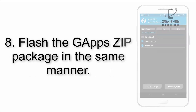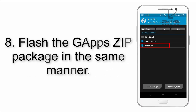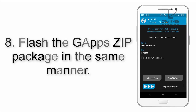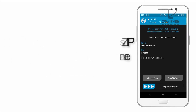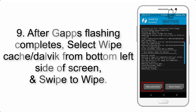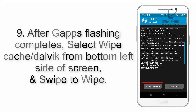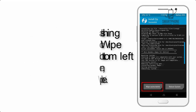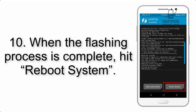Step 8: Flash the GApps zip package in the same manner. Step 9: After GApps flashing completes, select Wipe Cache and Dalvik from the bottom left side of the screen and swipe to wipe. Step 10: When the flashing process is complete,